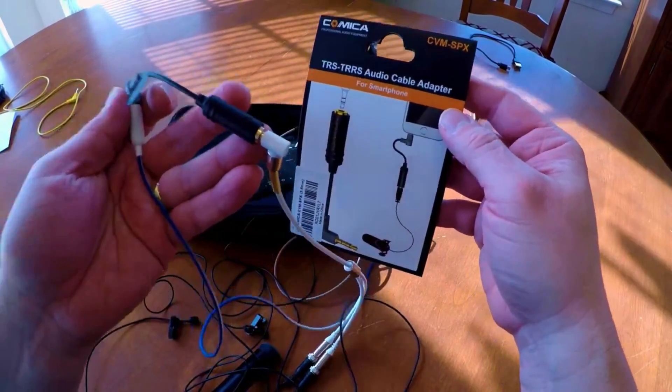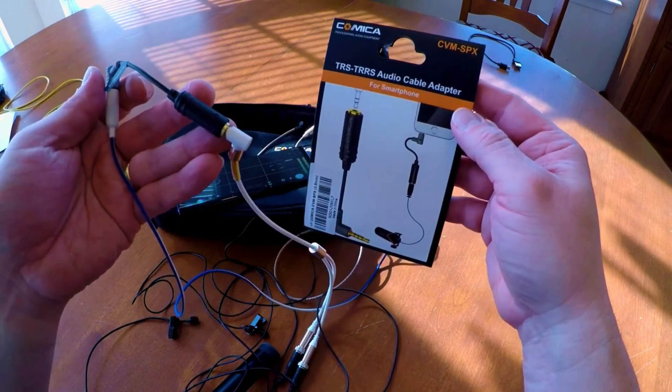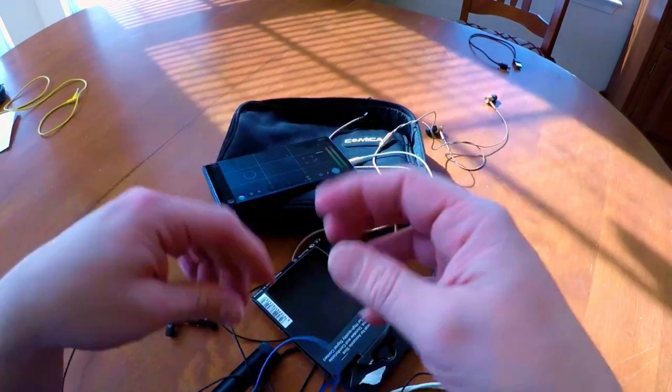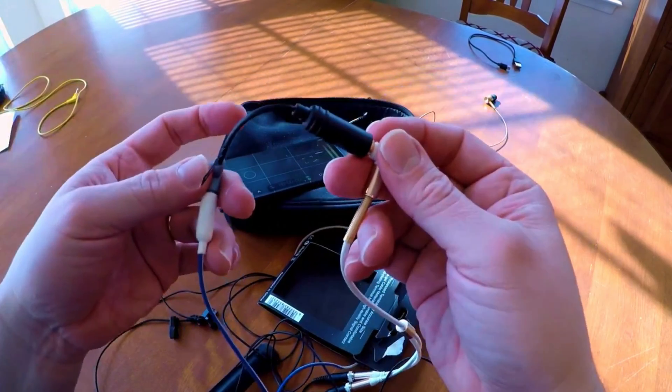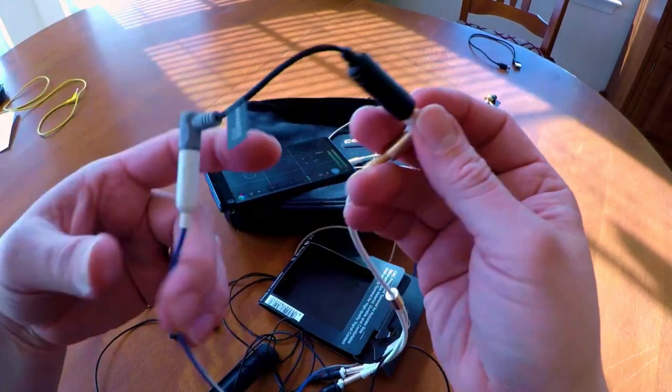So this is the Comica TRS to TRRS audio cable adapter for your smartphone. So if you don't have this, this is something you should probably consider getting. It really comes in handy. And it allows you to use external microphones as you just saw me do.